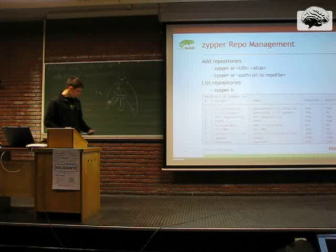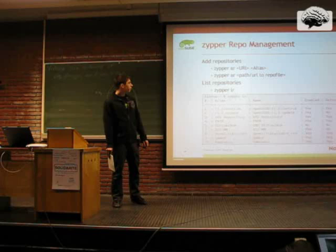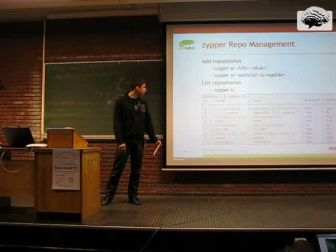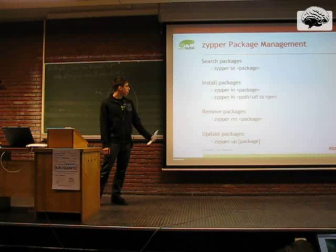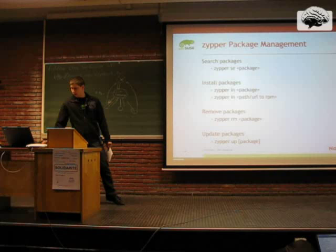Zypper is the command line interface. You can use it for repo and package management. For example, add repositories using an actual repo or URL, or a path to a .repo file. Here is a list of repositories showing how it looks when using the server. You can do package management: search, install by package name, install by path or URL to an RPM and satisfy dependencies from your configured repositories. You can also remove packages and update packages by package name, or update all packages.